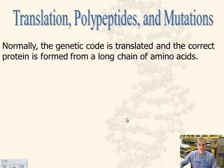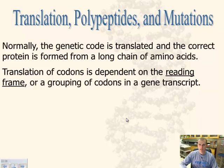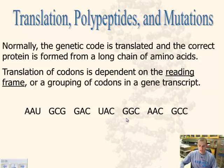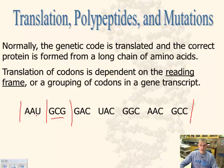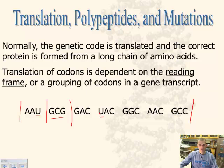Typically, the genetic code is translated correctly. When we talk about making proteins, it's done without mistakes — the long chain of amino acids are the appropriate ones that should have been made. The translation of the codon is dependent upon what we call the reading frame. Here you can see the different triplets, and notice they have U's in them, so we're talking about messenger RNA — these are the ones that code for our amino acids.